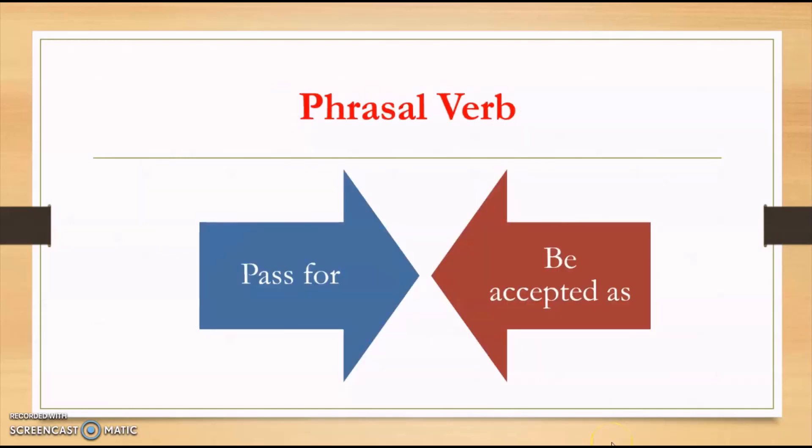One of the questions is on phrasal verbs. The phrasal verb given in 2019 paper is pass for. Pass for means be accepted as. It is given in a statement like the two of them look so much alike that they often pass for sisters. They're considered as sisters or they're accepted as sisters.